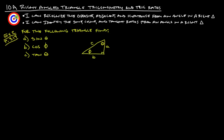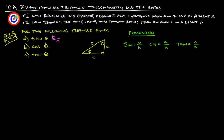With that, for the following triangle we're going to find sine of theta, cosine, and tangent. Remember that sine is opposite over hypotenuse, cosine is adjacent over hypotenuse, and tangent is opposite over adjacent. So, sine of theta — here's theta — sine is opposite, which is B, over hypotenuse, which is C. So that would be B over C. Cosine is adjacent, which is A, over hypotenuse, which is C. Interestingly, sine of theta and cosine of the other angle end up being the same thing. Tangent of theta is opposite over adjacent, so that would be B over A.